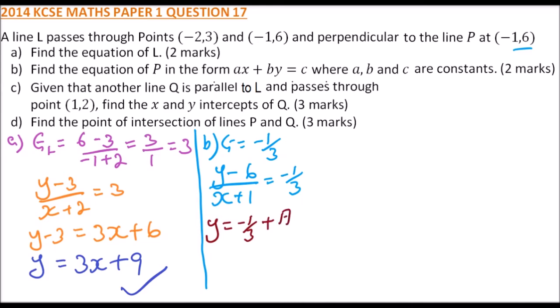We get minus a third x plus 17 over 3. Multiply through by 3 to get 3y equals negative x plus 17. Rearranging, our equation becomes x plus 3y equals 17.